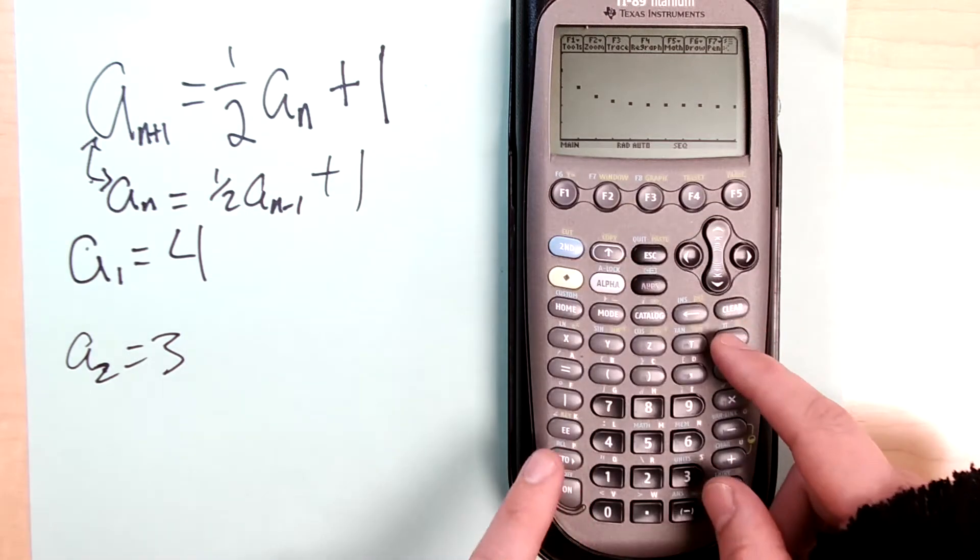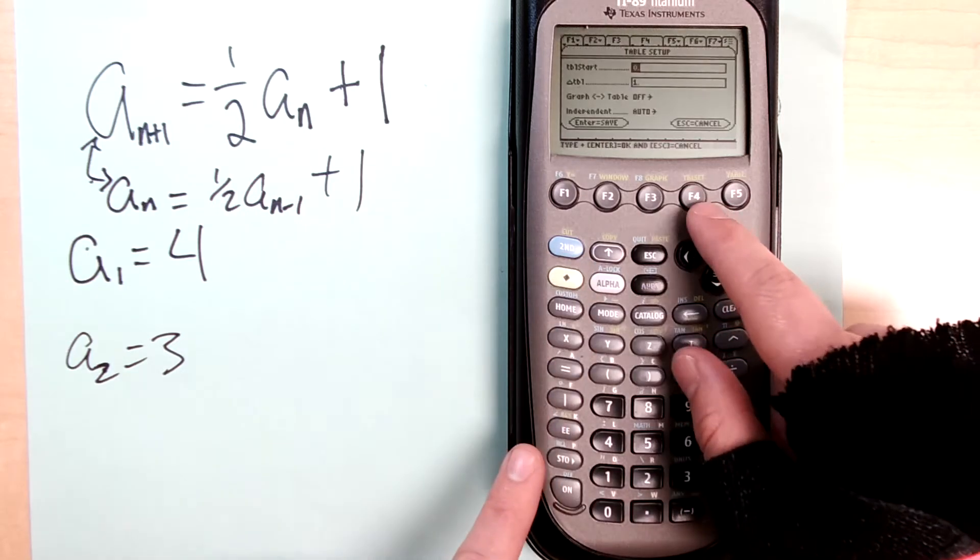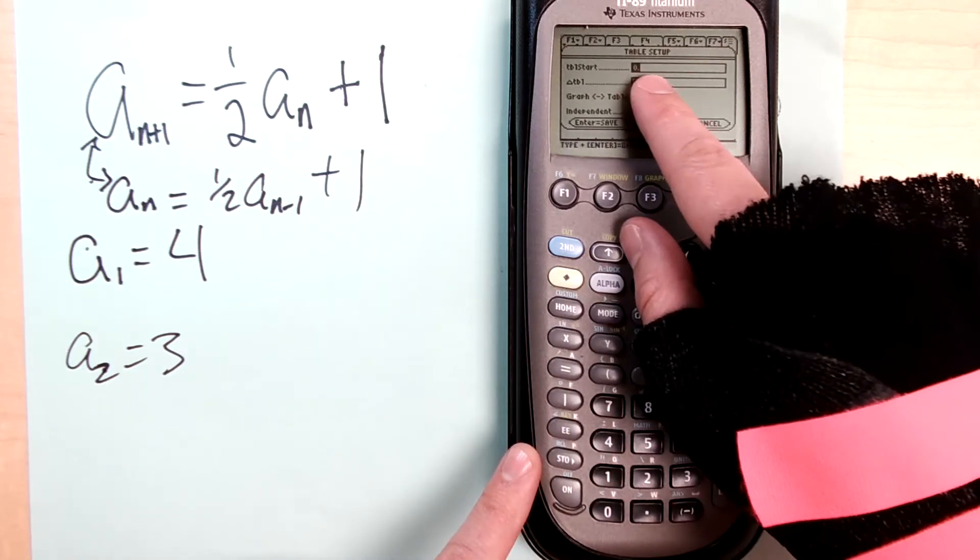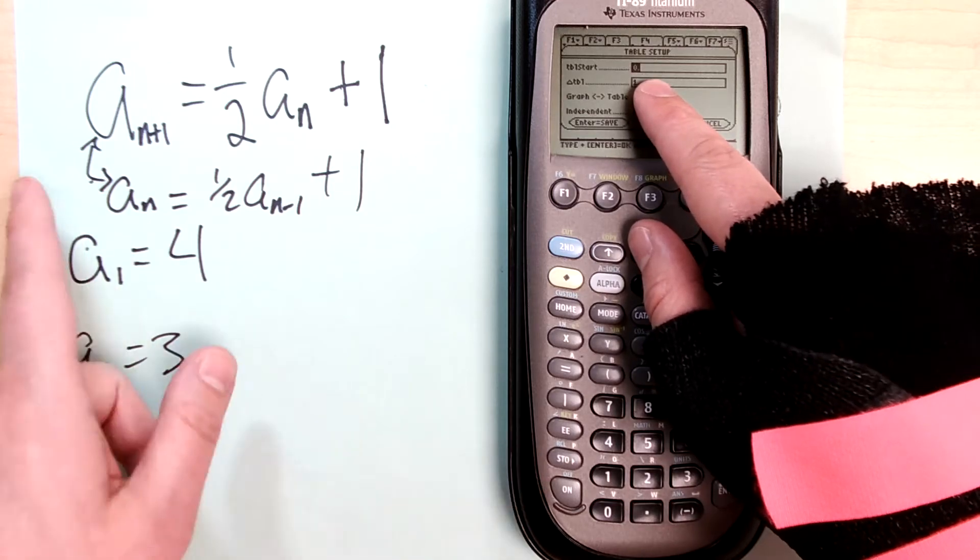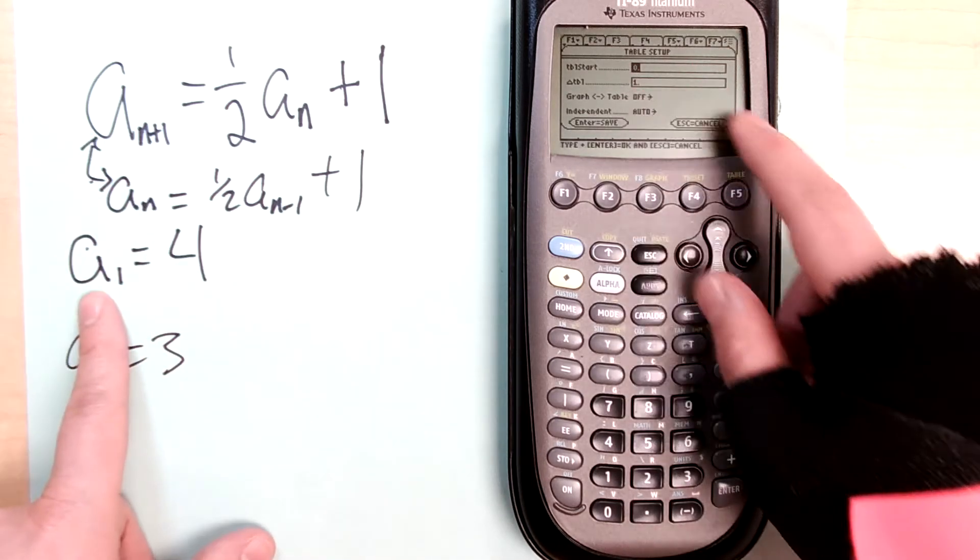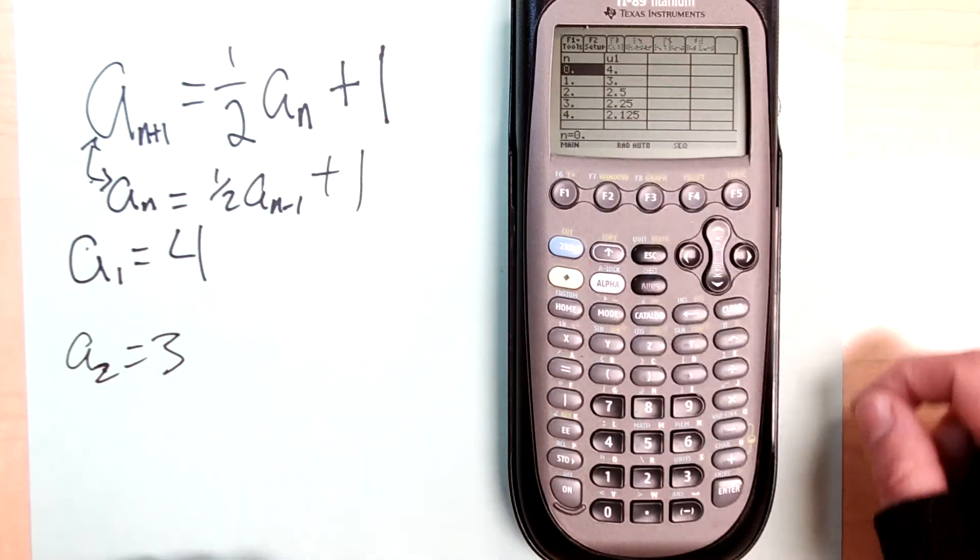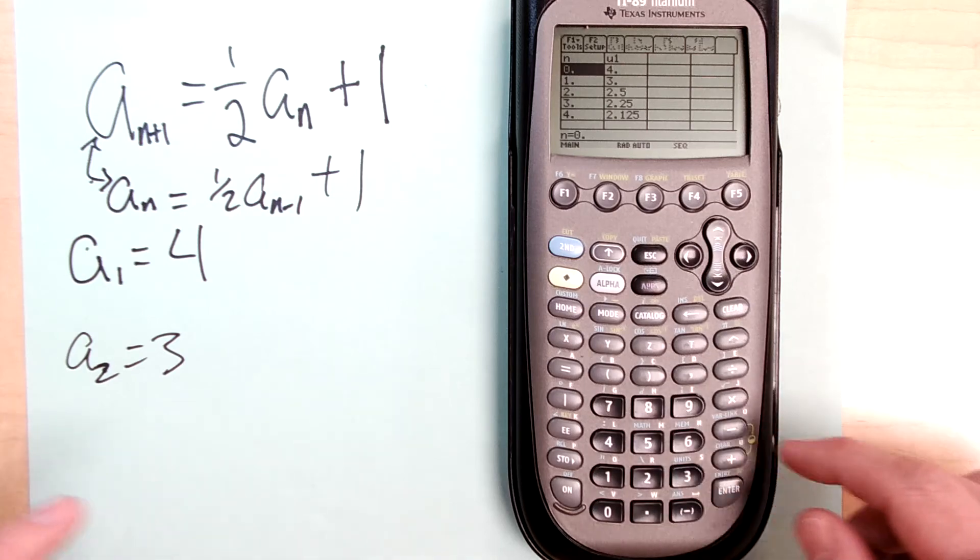Also for table set, go there. That's where you want it to start, so which of the first values you want to look for, and then always have it jump by one because we're looking at sequences. You can go to table and there it is, it's filling out for you. I hope this video has been useful.